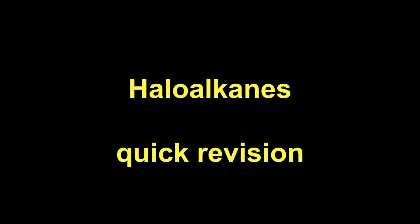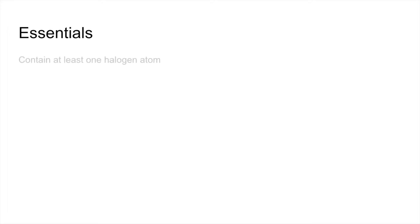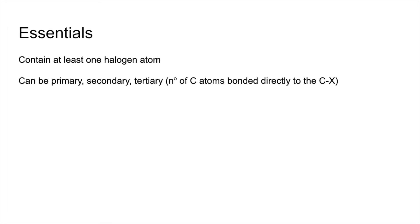Quick revision video on haloalkanes. We'll start with the essentials. They contain at least one halogen atom. They can be primary, secondary or tertiary, and that's all about the number of carbon atoms bonded directly to the carbon-halogen carbon.